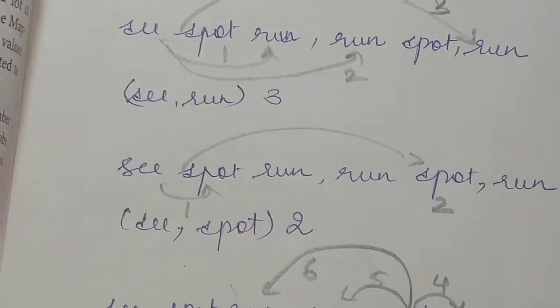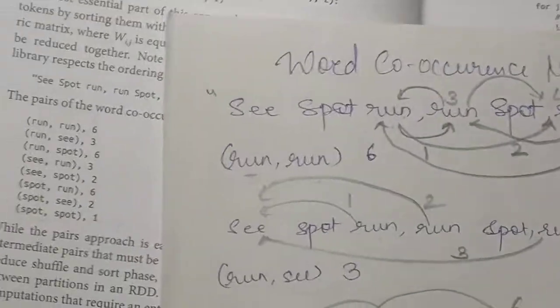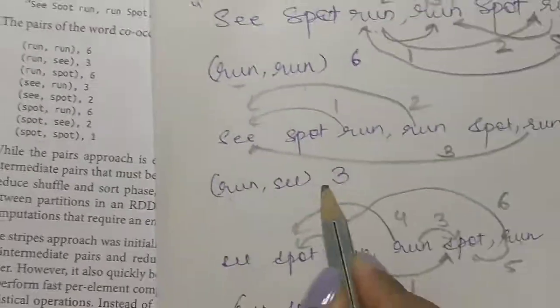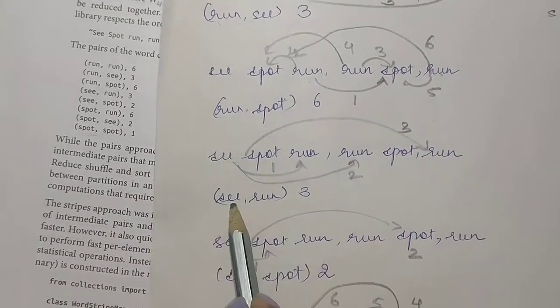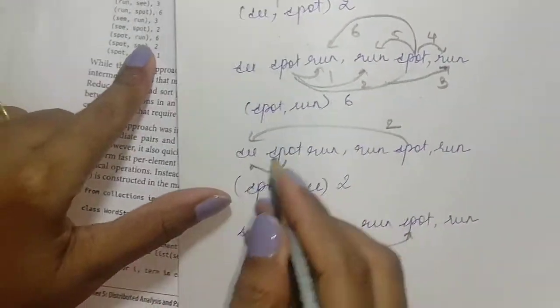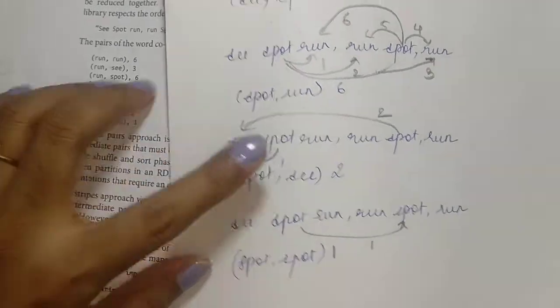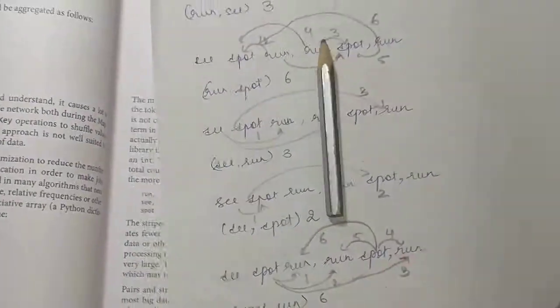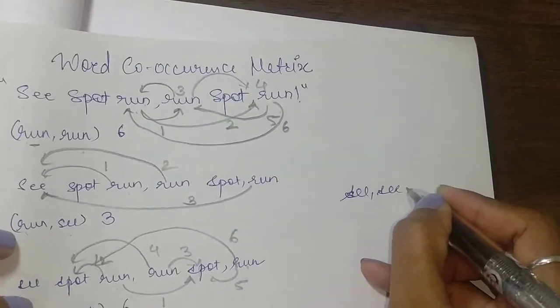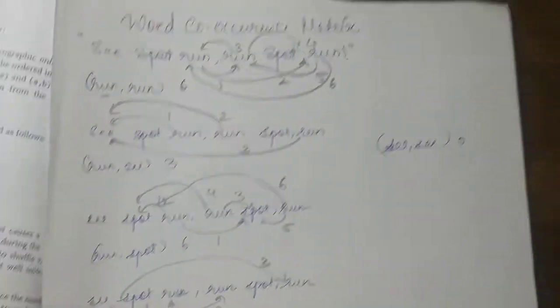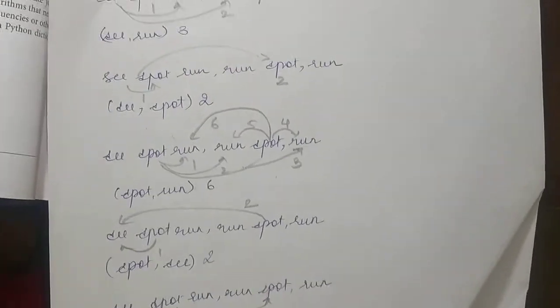Let's look at the textbook and check whether we got the right answers. Run and run is six, run and see is three, run and spot is six, see and run is three, spot and run is six, spot and see is two, and spot and spot is one. You may have noticed they have not written see-see, which is zero. Thank you so much — hope you understood this.